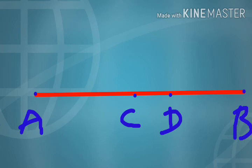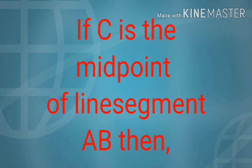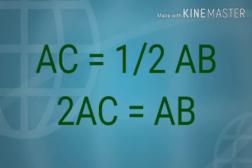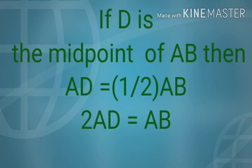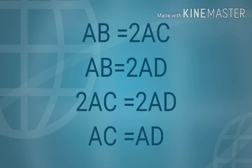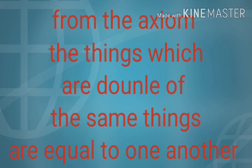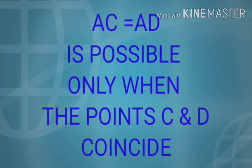If C is the midpoint of line segment AB, then AC equals half AB, which means 2AC equals AB. If D is the midpoint, then AD equals half AB, so AB equals 2AD. From these two: AB equals 2AC and AB equals 2AD, so 2AC equals 2AD, therefore AC equals AD.